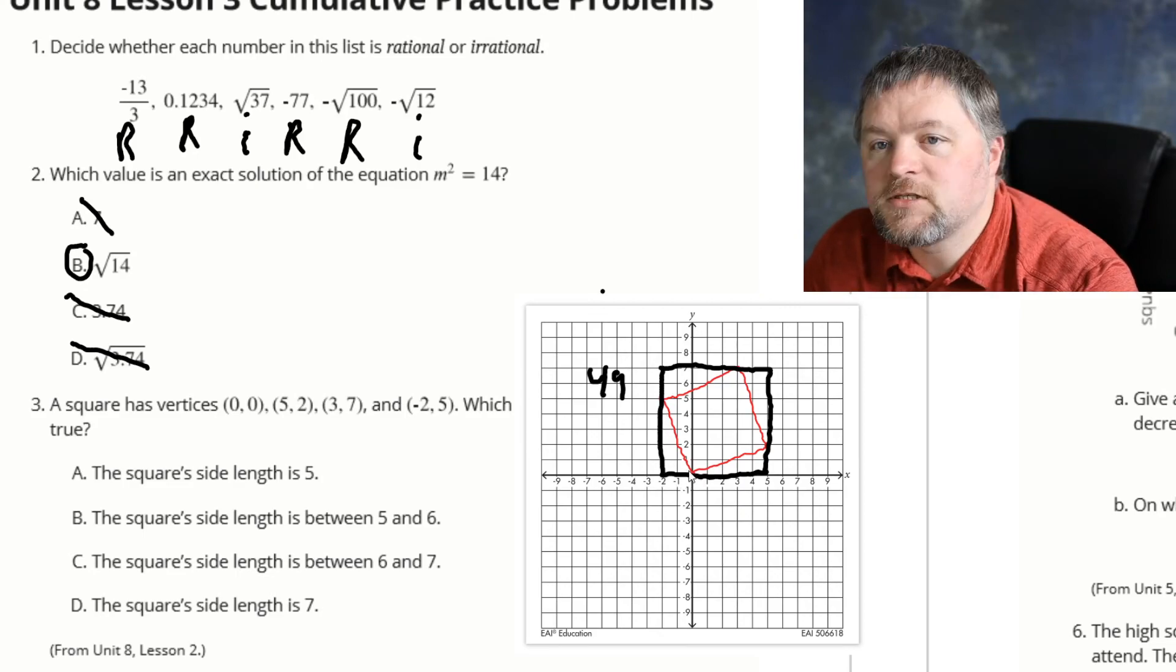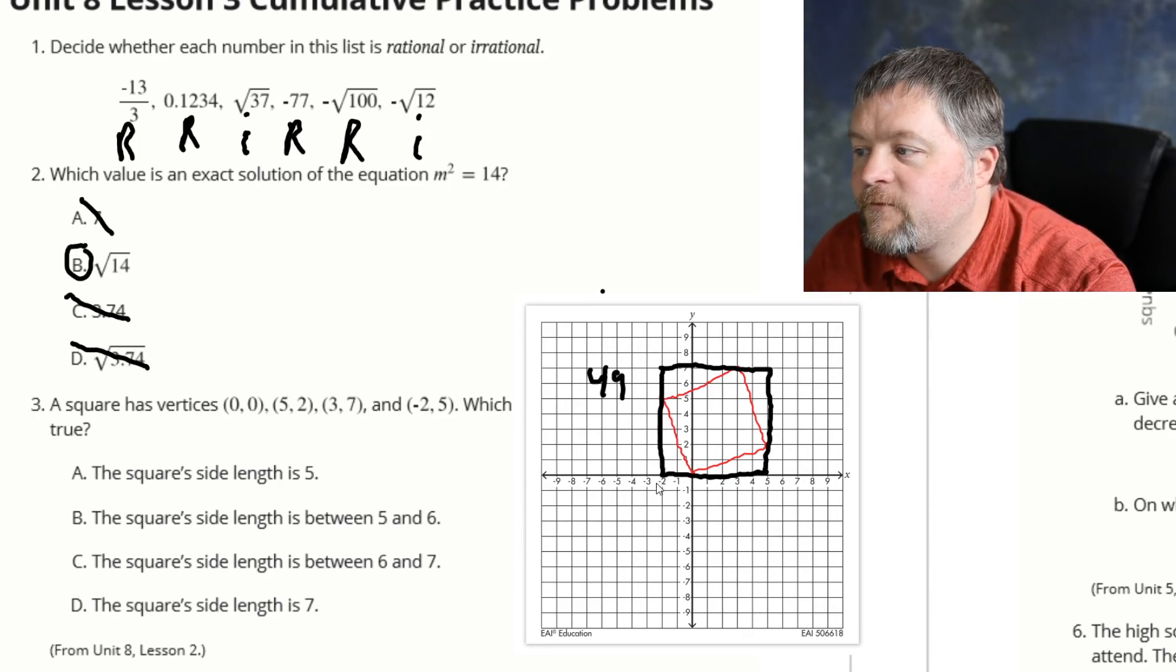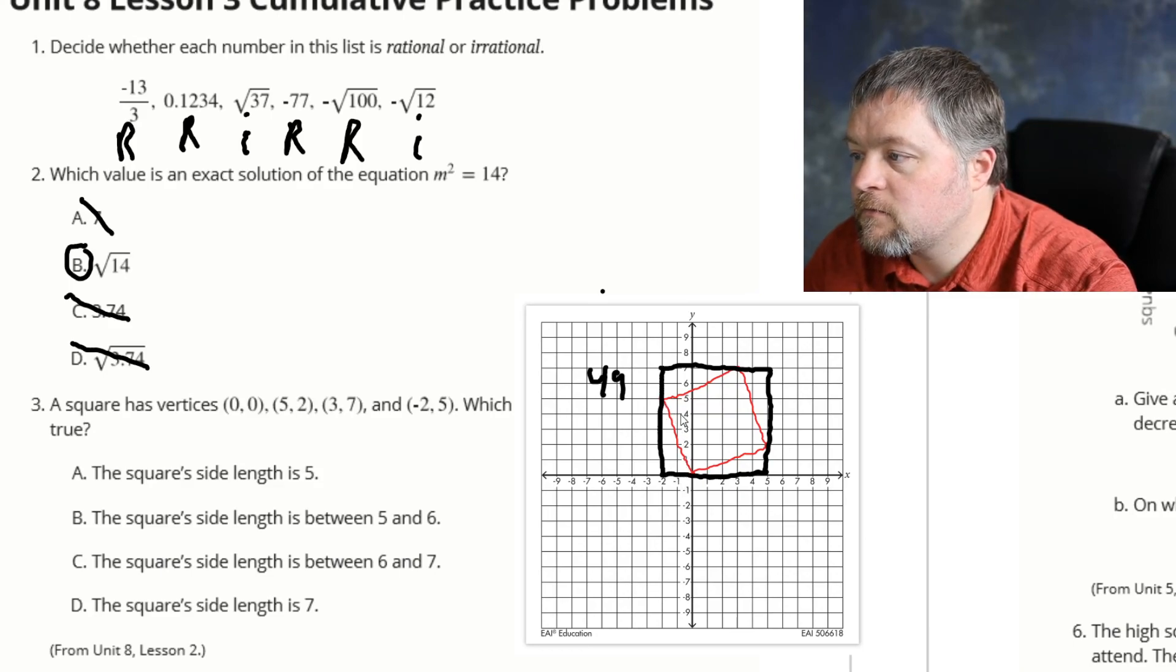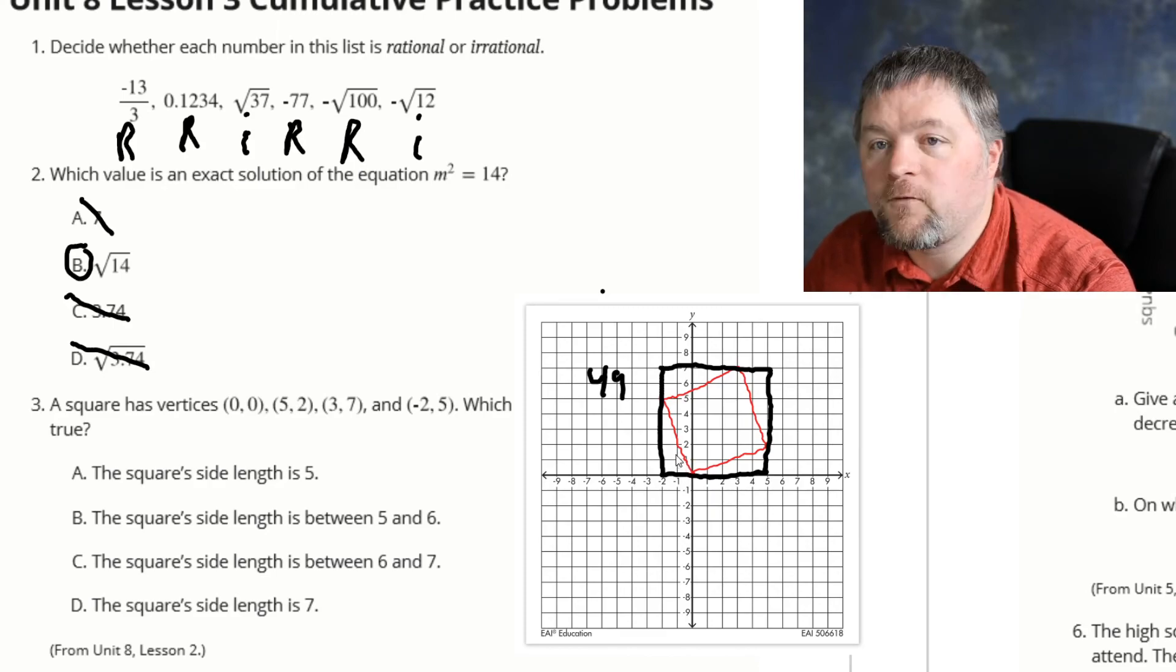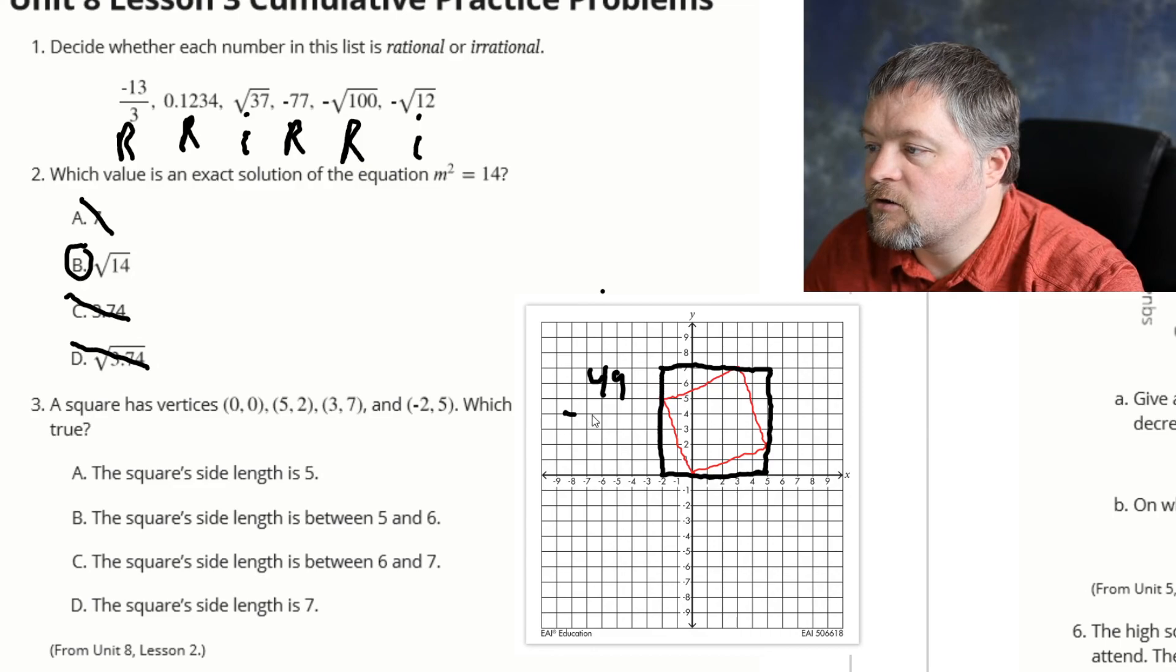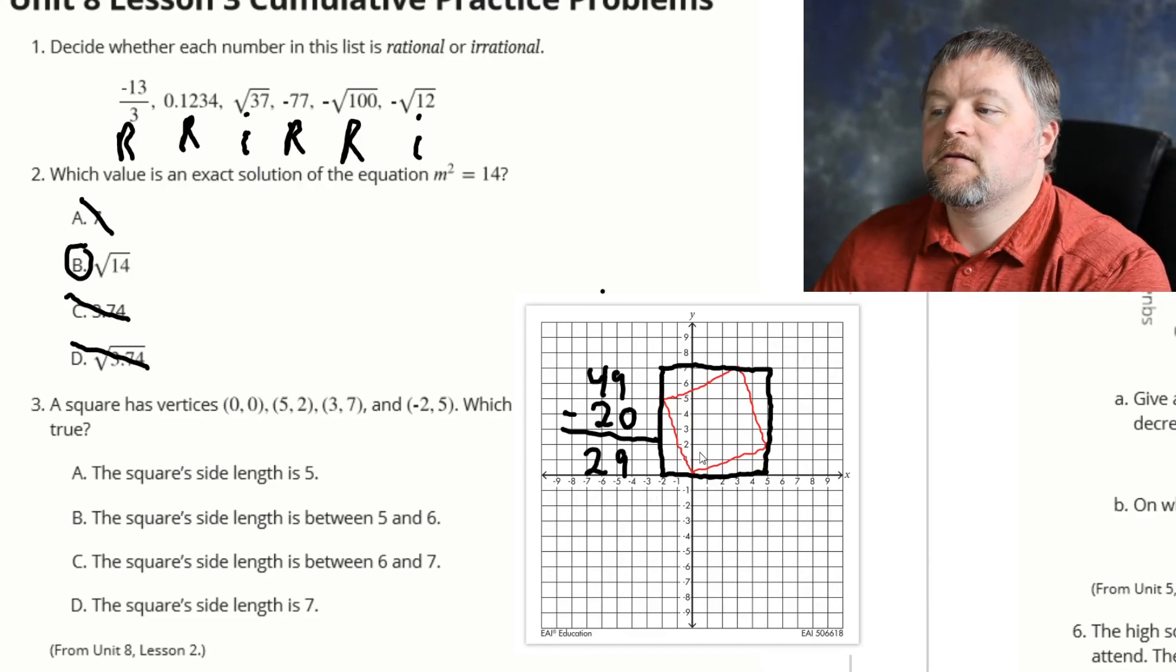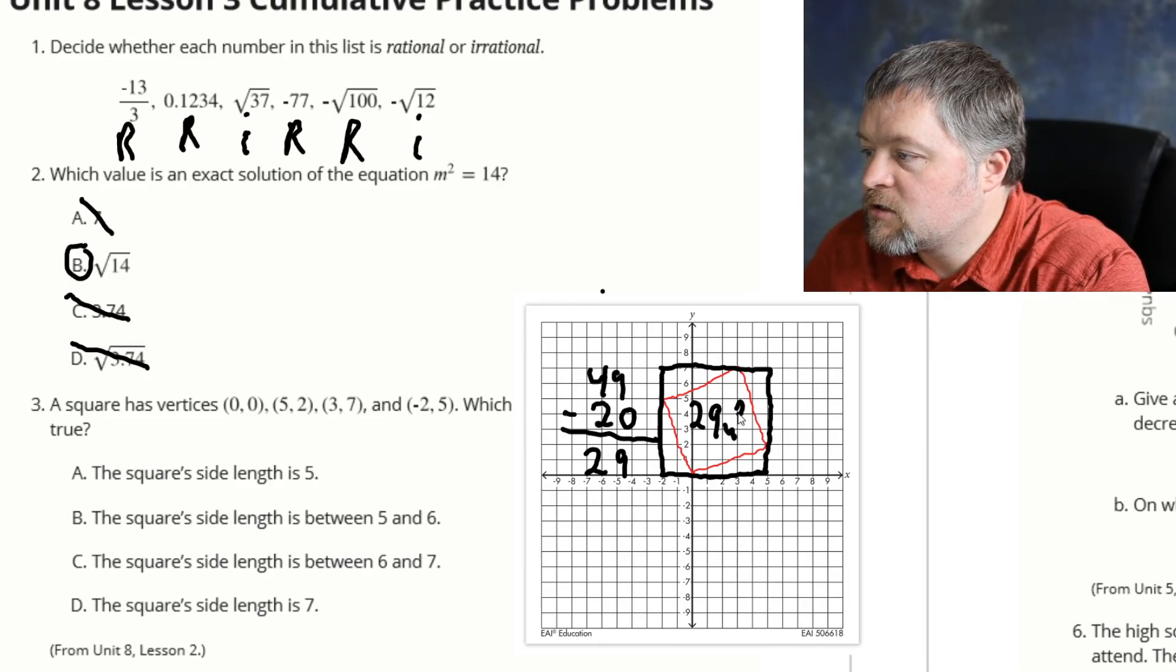Now, we have 4 smaller triangles surrounding our square, which are 2 by 5. 2 times 5 is 10. 10 over 2 is 5. There are 4 of them. 5, 10, 15, 20. So the area of our total inner square has to be 49 subtract 20, which is 29 square units. So the area of that is 29 square units.